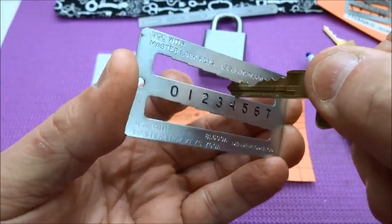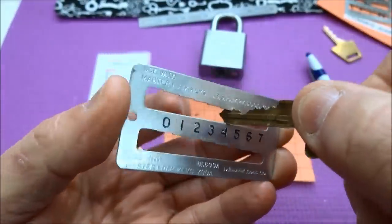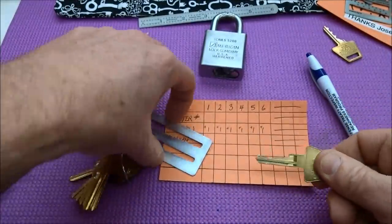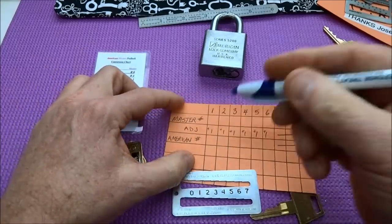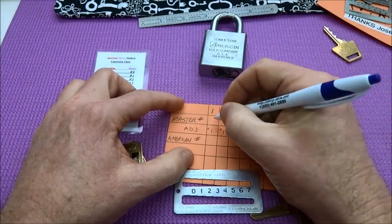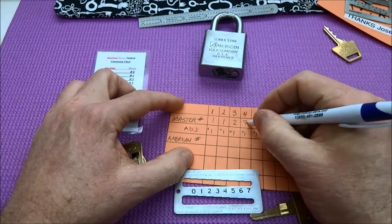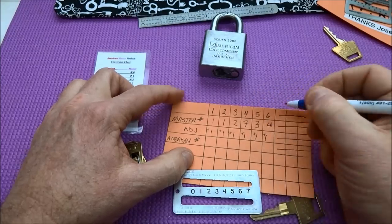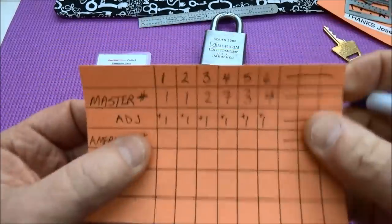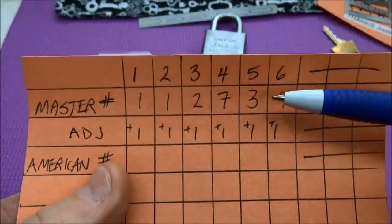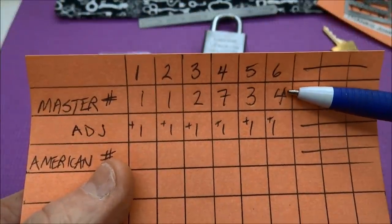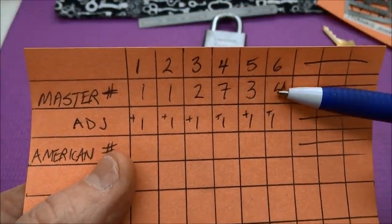Position five gives us a three, and the final position six gives us a four. So let's write those numbers down on our chart: one, one, two, seven, three, four.